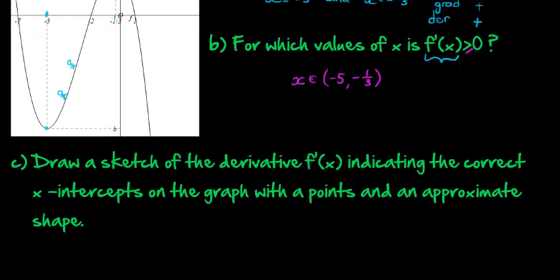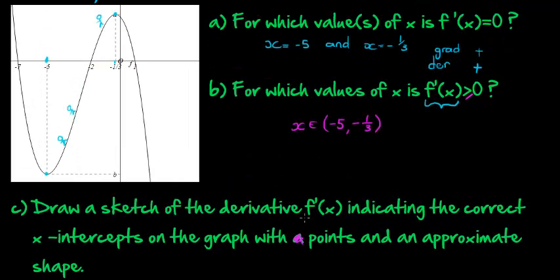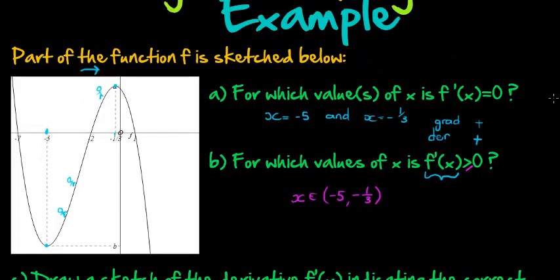Draw a sketch of the derivative, f'(x), indicating the correct x-intercepts on the graph with points and an approximate shape. Okay, so we must draw the derivative. We have absolutely no information with regard to what f of x is. We don't know the formula. And yet, we are taught to draw the derivative. Okay, how are we going to do that?